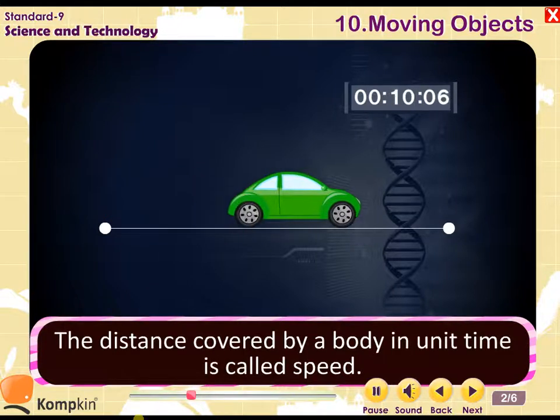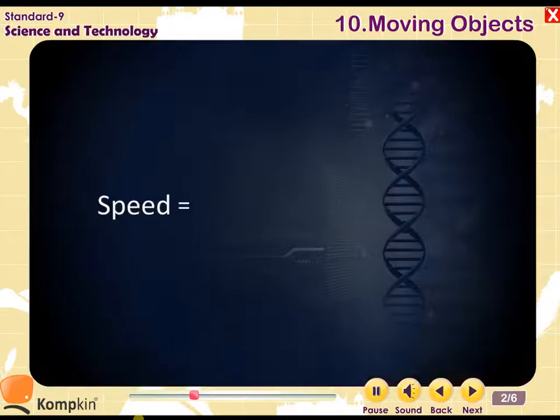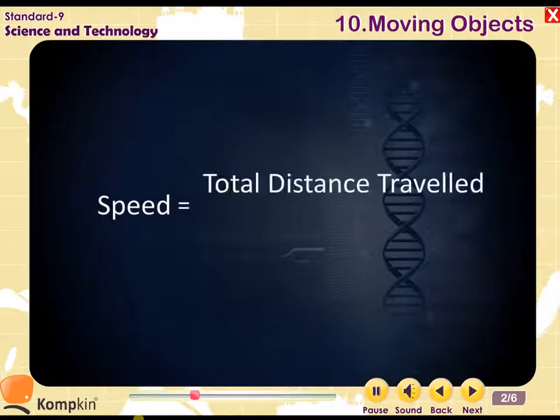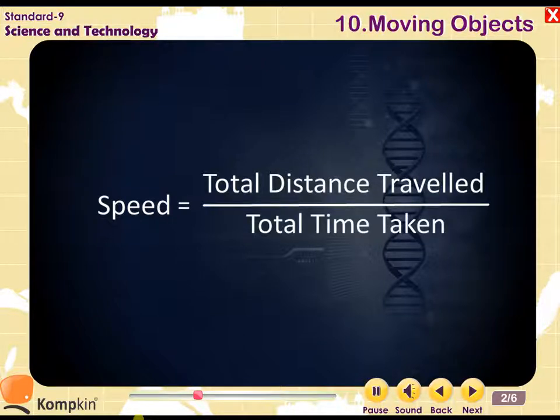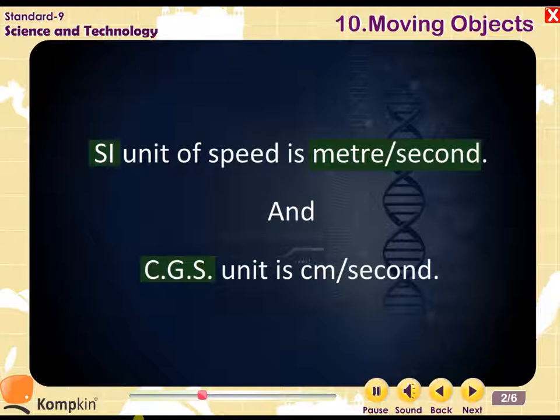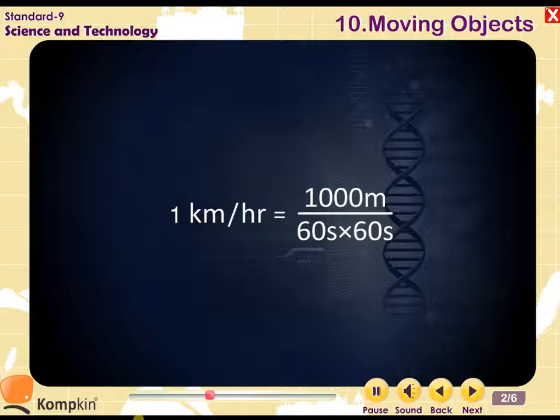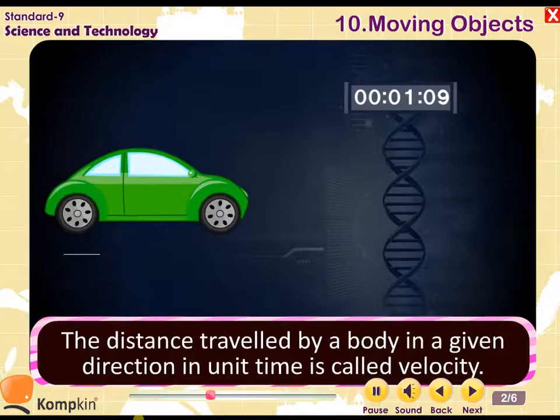Speed: the distance covered by the body in unit time is called speed. Speed is equal to total distance traveled divided by the total time taken. SI unit of speed is meter per second. CGS unit is centimeter per second. One kilometer per hour is equal to thousand meters upon 60 seconds into 60 seconds.